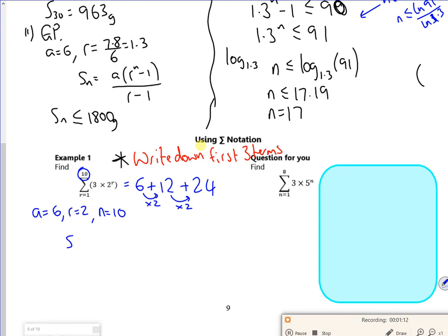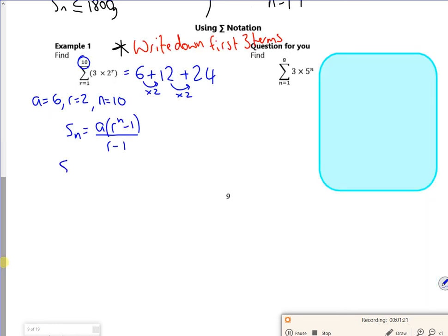So I want the sum of sum to n. Because r is 2, use that equation. So the sum of the first 10 terms is 6, 2 to the 10 minus 1, over 2 minus 1.